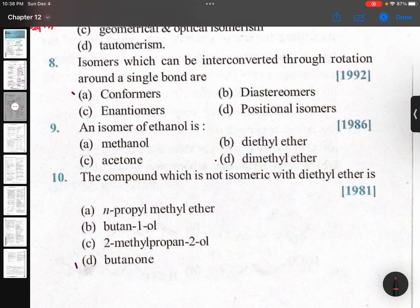Isomers which can be interconverted through rotation around a carbon-carbon single bond are called conformational isomers, conformers, or rotamers.